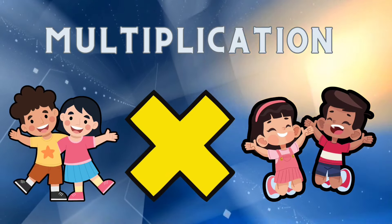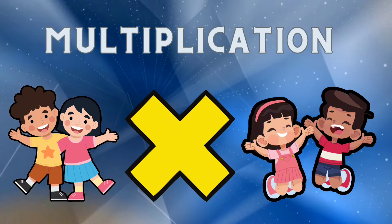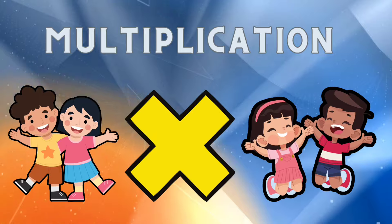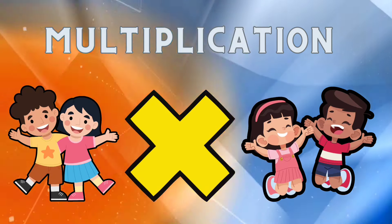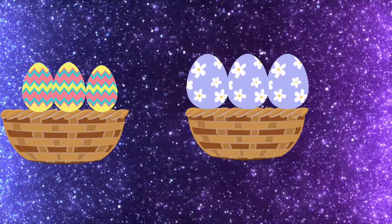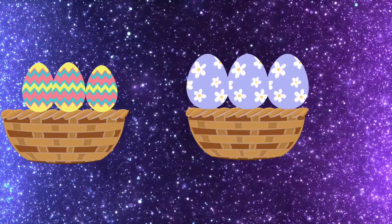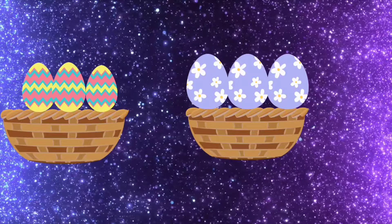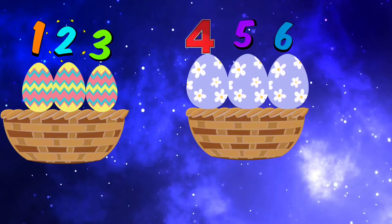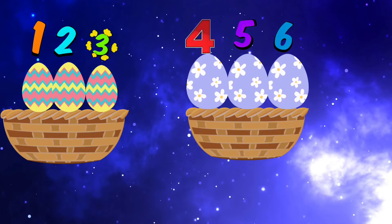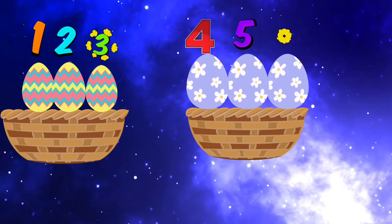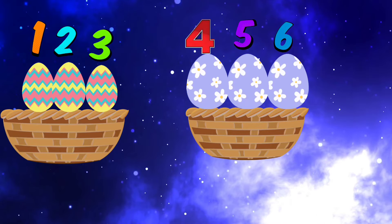Now let's dive into multiplication! Multiplication is like adding the same number again and again. Imagine you have two baskets and each basket has three eggs. How many eggs do you have in total? Exactly — two baskets with three eggs each means two times three, which equals six eggs. Let's try another example.